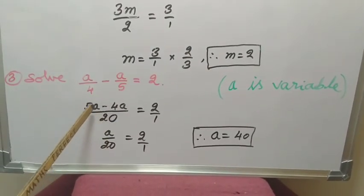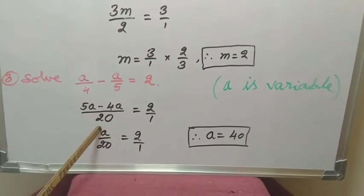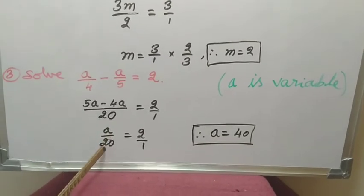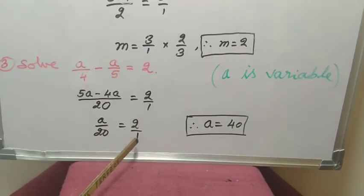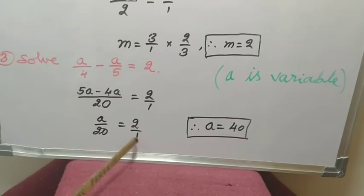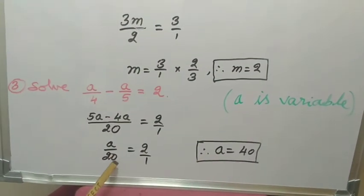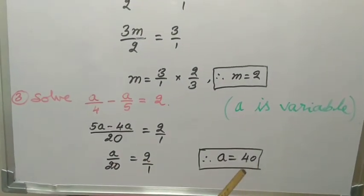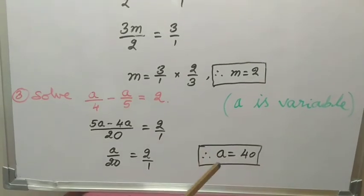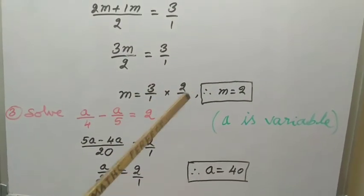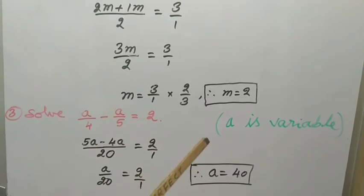Difference of these two is 1, 1A divided by 20 equal to 2 by 1. Cross-multiply: 1 into A is A, 20 into 2 is 40. So in this way, the method of solving simple linear equations.